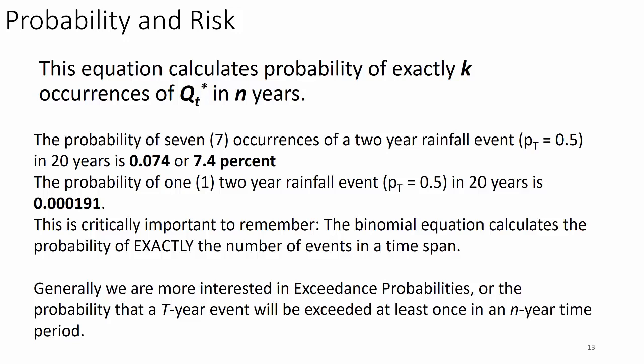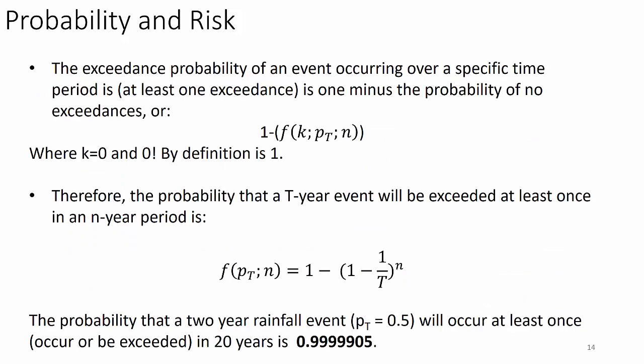Generally, we're more interested in exceedance probabilities — the probability that a certain T-year event will be exceeded at least once in an N-year time period. The exceedance probability of at least one exceedance is one minus the probability of no exceedances. Setting K equals zero in the binomial equation, and knowing that zero-factorial equals one by definition, we get the exceedance probability formula.